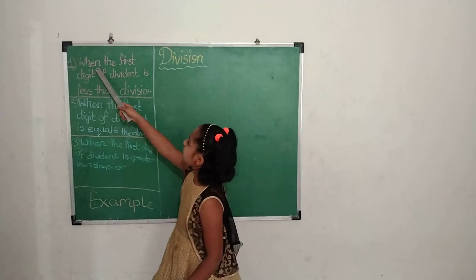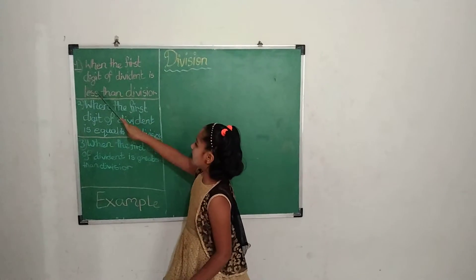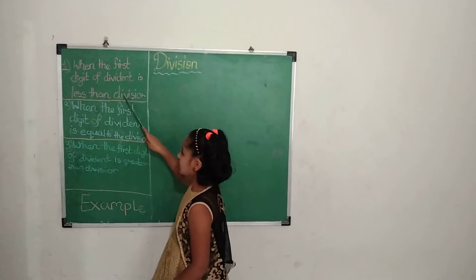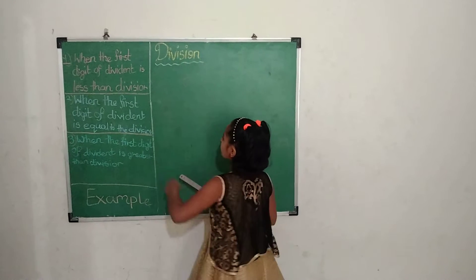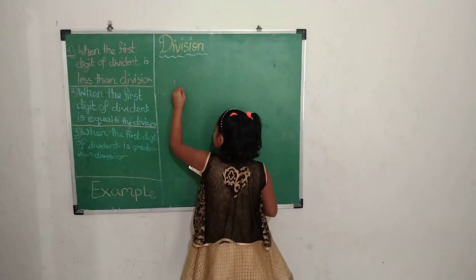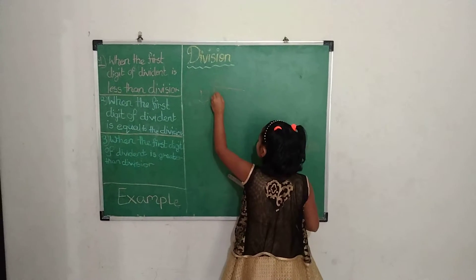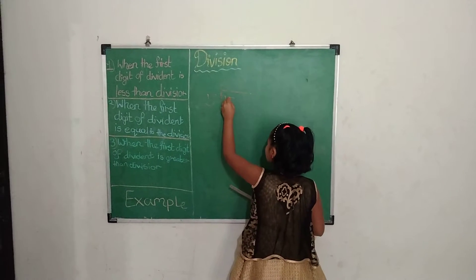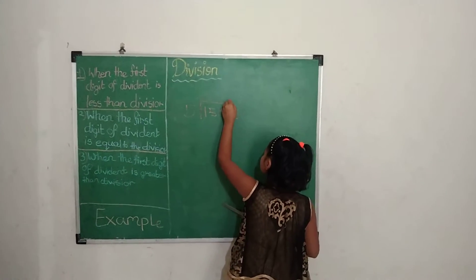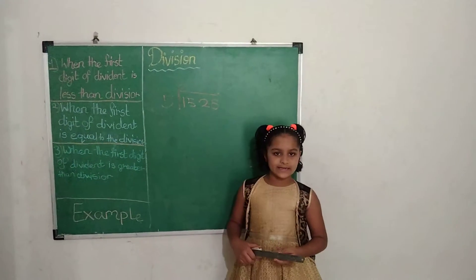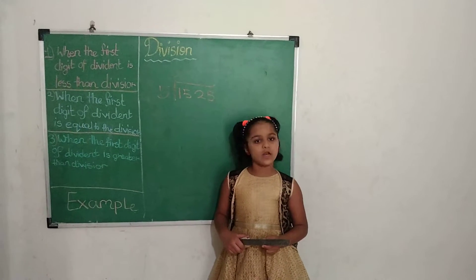Let's start. The first type is when the first digit of the dividend is less than the divisor. Our first example is 5 divided by 1525. To divide the sum, we want to write the table of 5.